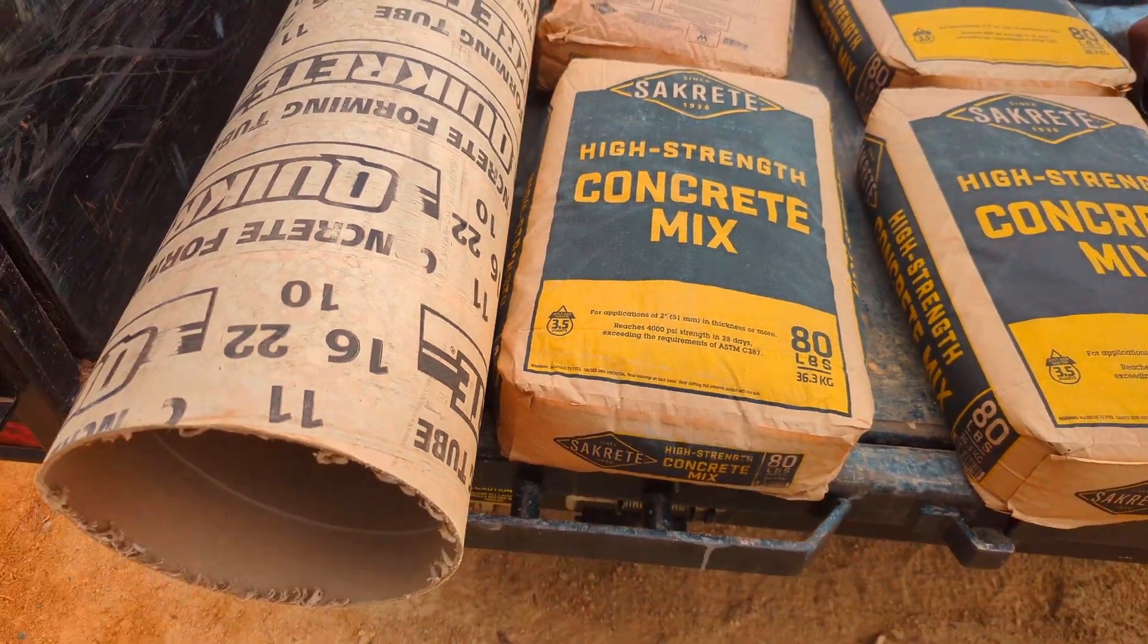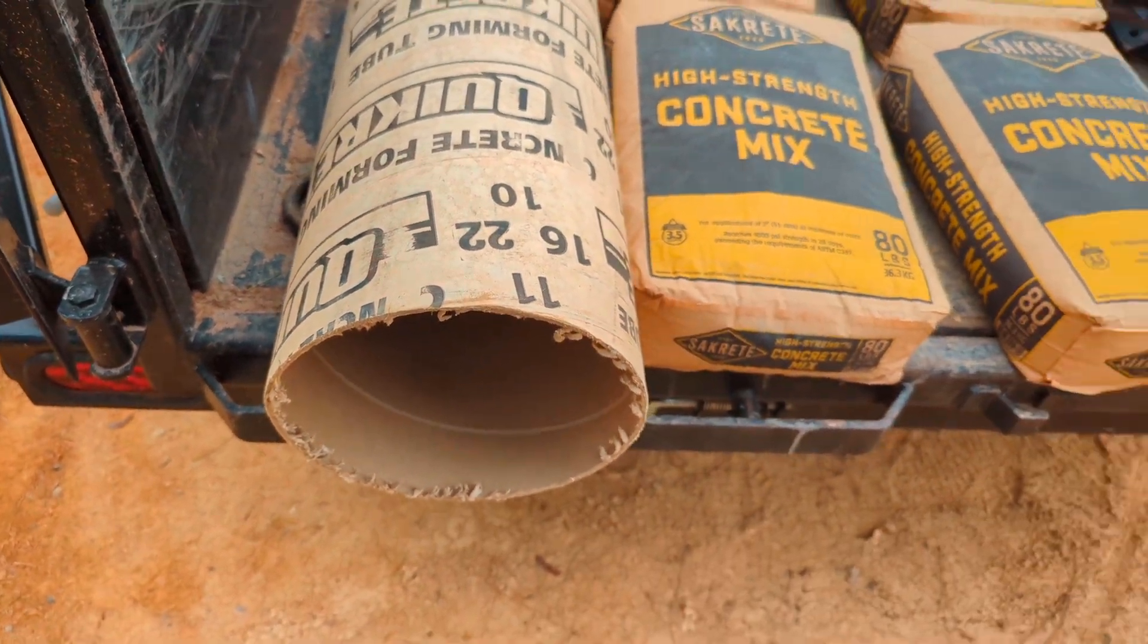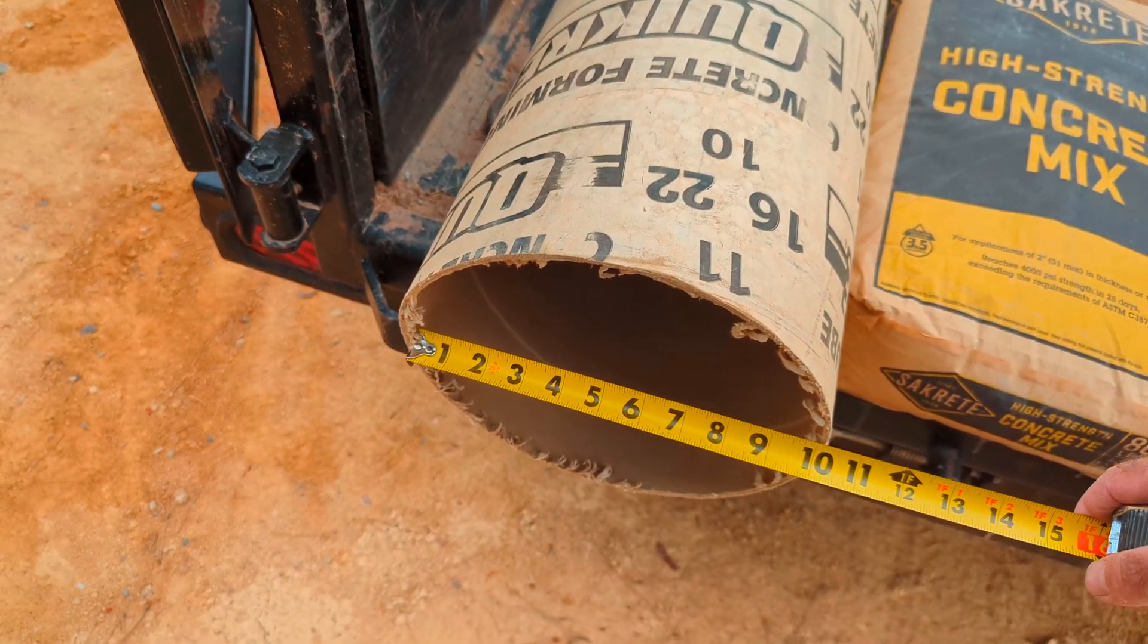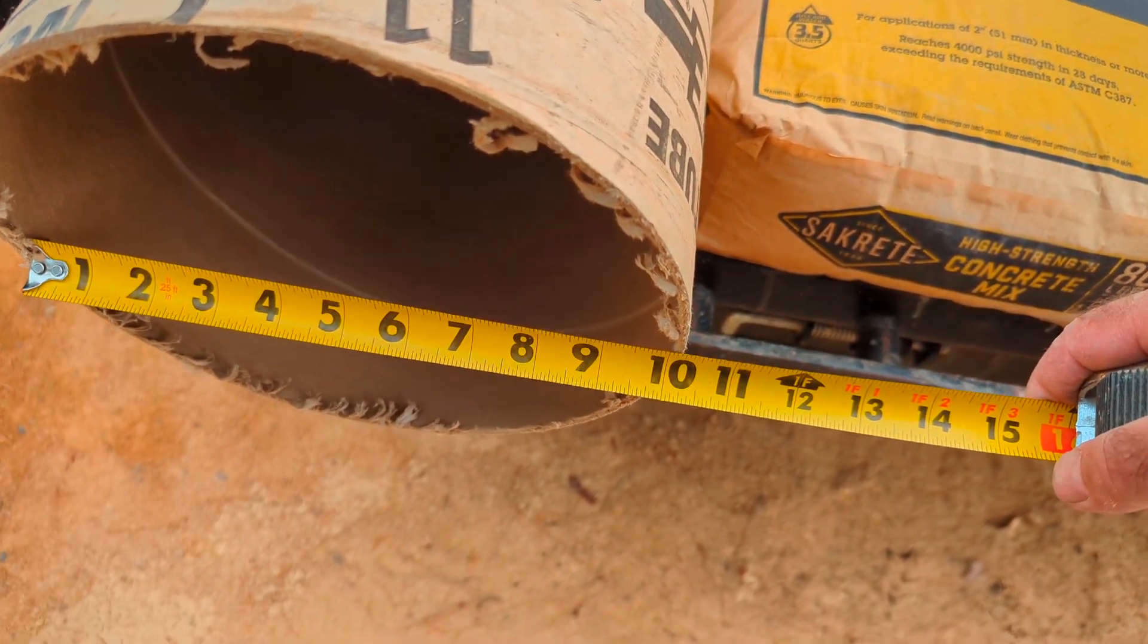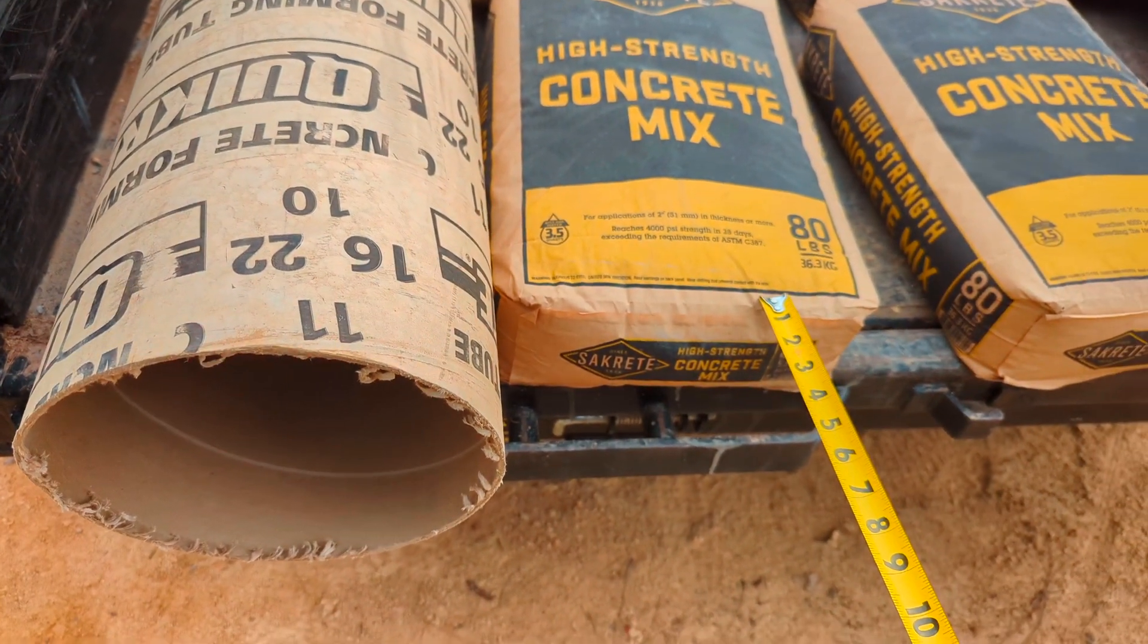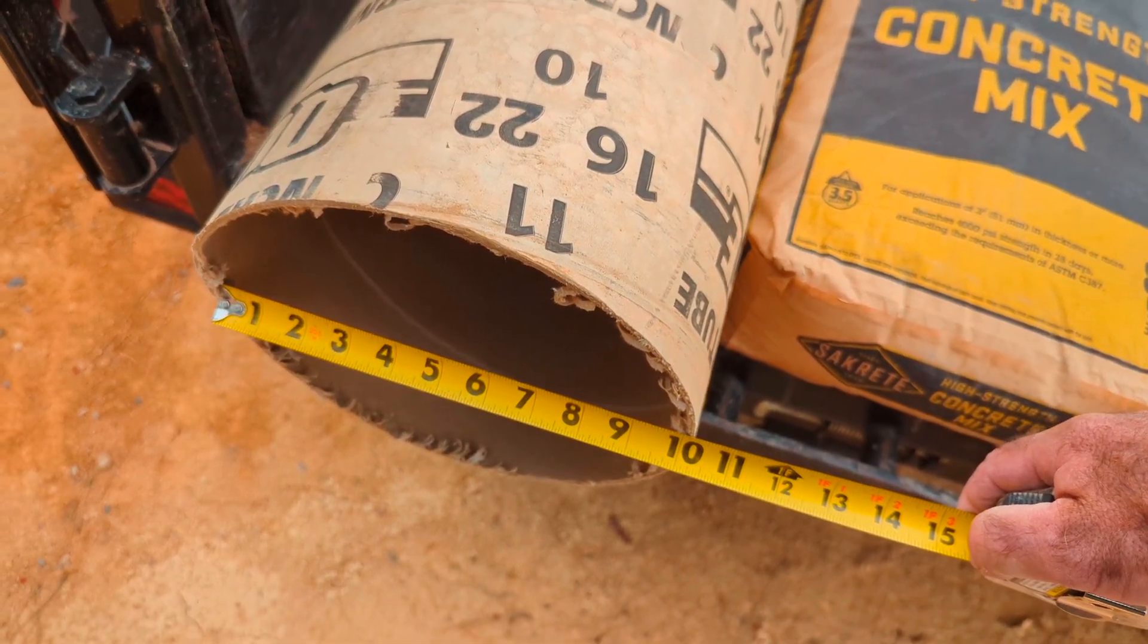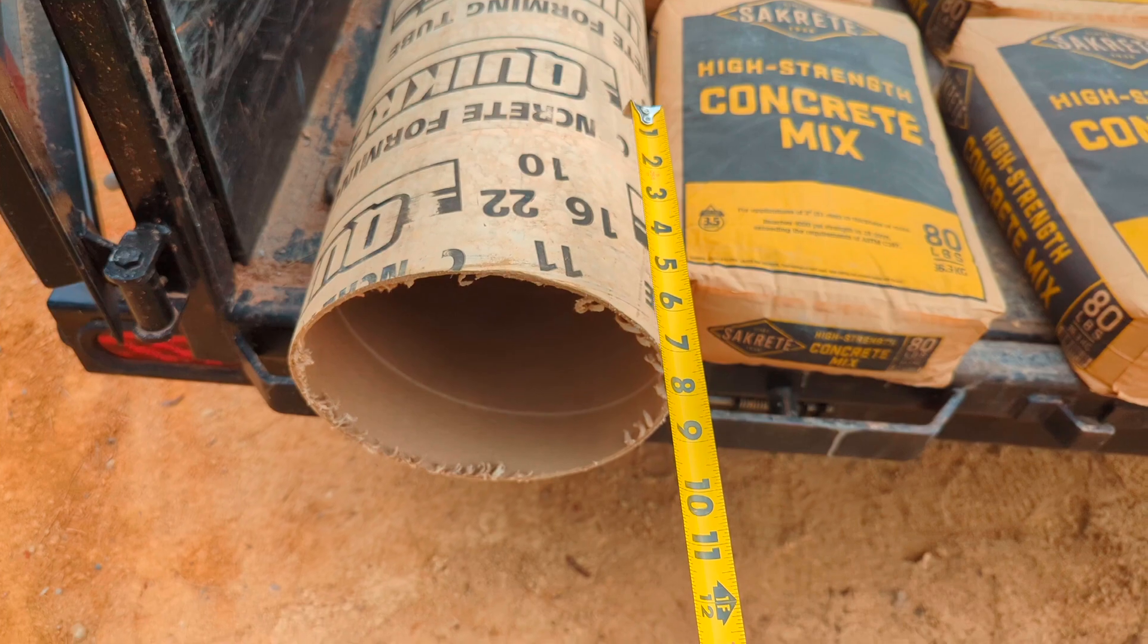So what I want to know is where do I cut this length to make a step stone so that it's going to work out to be one bag. So the inside of this is 10 inches. So let's see if we can figure this out. It's a one bag, 80-pound bag. It's 0.6 cubic feet. This is 10 inches on the inside. How long to equal one bag? Let's go figure that out.